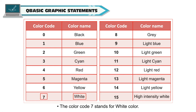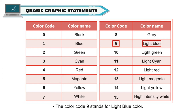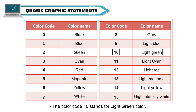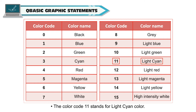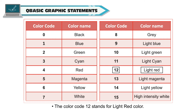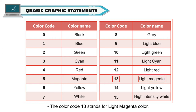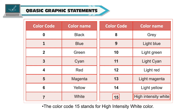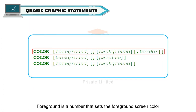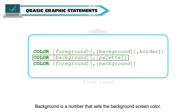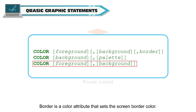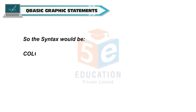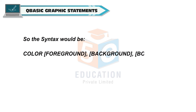The color code 7 stands for white color. The color code 8 stands for gray color. The color code 9 stands for light blue color. The color code 10 stands for light green color. The color code 11 stands for light cyan color. The color code 12 stands for light red color. The color code 13 stands for light magenta color. The color code 14 stands for light yellow color. The color code 15 stands for high intensity white color. Foreground is a number that sets the foreground screen color. Background is a number that sets the background screen color. Border is a color attribute that sets the screen border color.